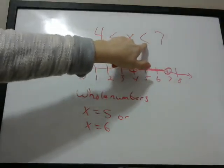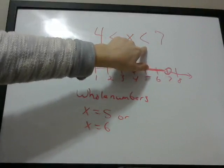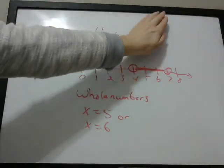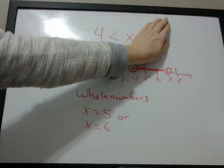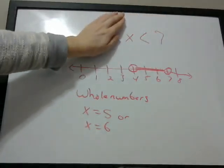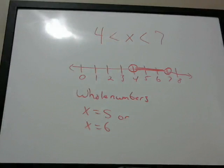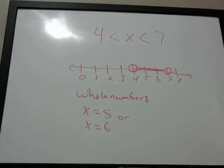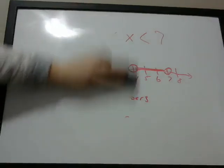So when you see x bounded on both sides, you have to read that as an and statement. You have the left-hand side that says x is greater than 4, and x is less than 7. So it's really two inequalities that you have to figure out to find the actual answer to the question. So we're going to do an equation that's a little bit more complicated.